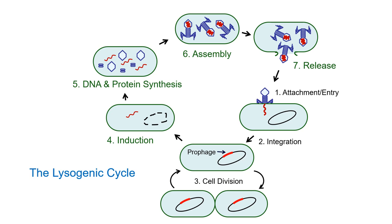This sort of thing happens in humans as well. Several viruses insert their genome into your chromosomes — for instance, herpes viruses. The chicken pox virus damages skin cells during the lytic cycle, but also incorporates its genome into nerve cells deep in the skin. Later in life, a trigger can cause induction — activating those prophages and causing them to give rise to new active virions — resulting in shingles.